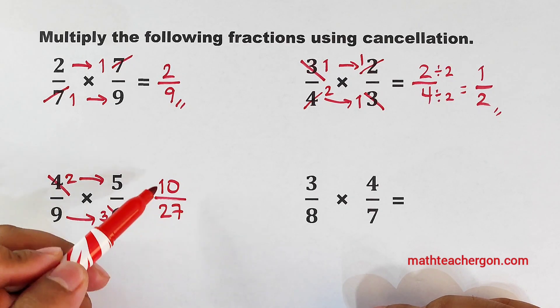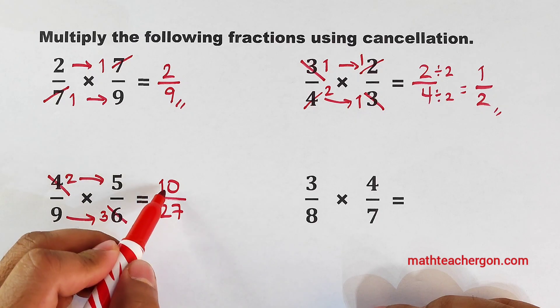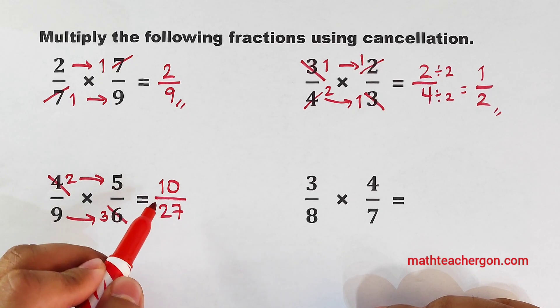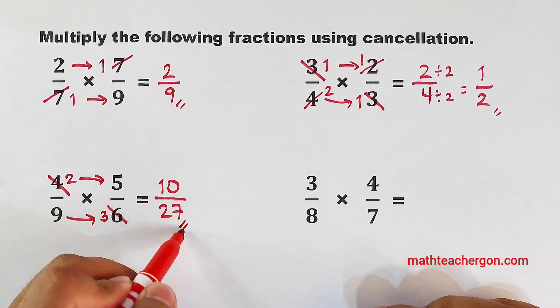And inspecting or checking whether it can be simplified, 10 over 27 is already in simplified form.